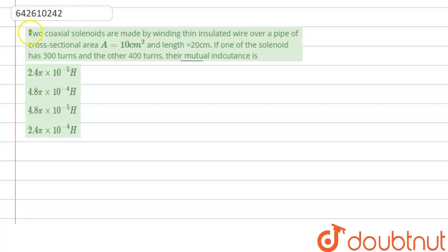Hello everyone, let's start the question. Question is that two coaxial solenoids are made by winding thin insulated wire over a pipe of cross sectional area equal to 10 cm square and length 20 cm. If one of the solenoid has 300 turns and the other 400 turns, their mutual inductance is.